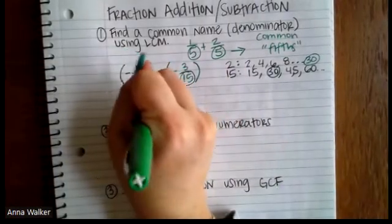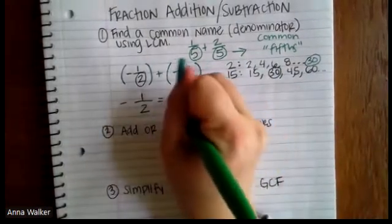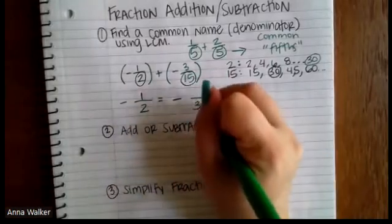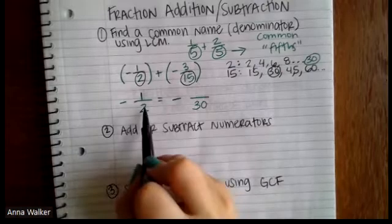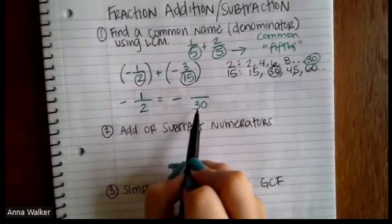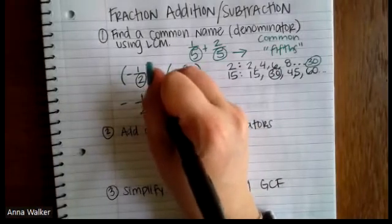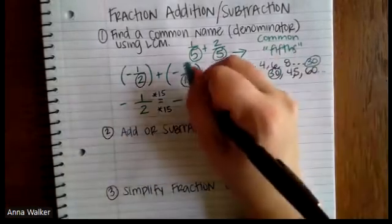So the way that we would rewrite these fractions with our common denominators. So we're going to take one half, I'm going to put the negative off to the side. And so our new fraction is going to be negative. I want the denominator to be equivalent to something over 30. So we have to look at what times two makes 30 and that's 15. So we're going to do the same thing here to the top. One times 15 is 15.